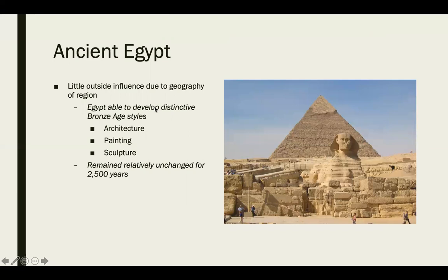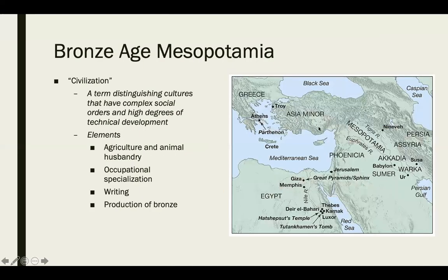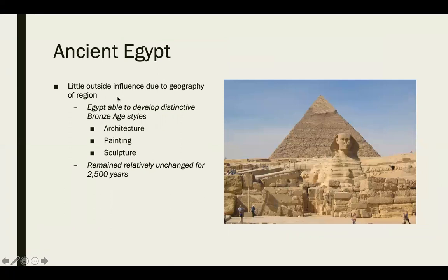Mesopotamia covers all this area on the map, and we see this little bridge that leads into Egypt. Egypt's culture was also developing very rapidly during this time, but it's a little bit separate from Mesopotamia. A lot of the same things — agriculture, animal husbandry, occupational specialization, writing, and production of bronze — are still happening in Egypt, but they're doing it a little differently because they're cut off from Mesopotamia. There is little outside influence due to the geography of the region. Egypt is able to develop distinctive Bronze Age styles in architecture, painting, and sculpture, and their style remains relatively unchanged for about two thousand five hundred years.